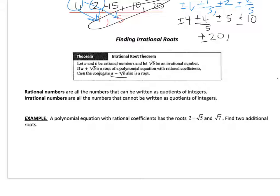So a polynomial equation with rational coefficients has roots at 2 minus root 5 and root 7. Find two additional roots. So if I use this theorem, the conjugate of 2 minus root 5 is 2 plus root 5. And the conjugate of root 7 is negative root 7.